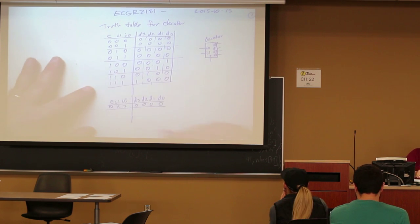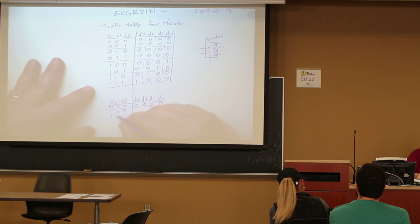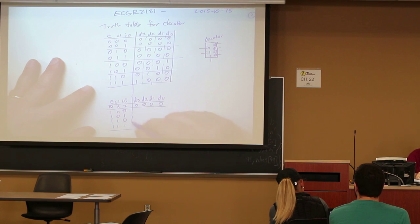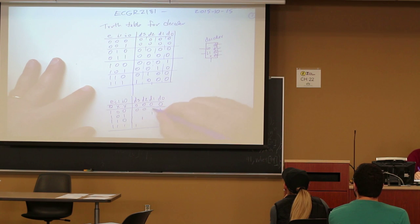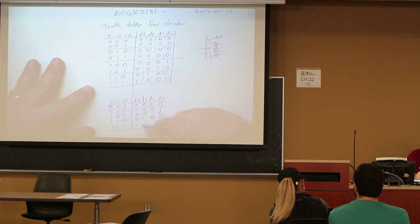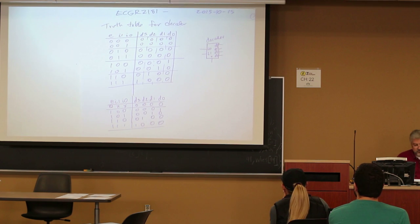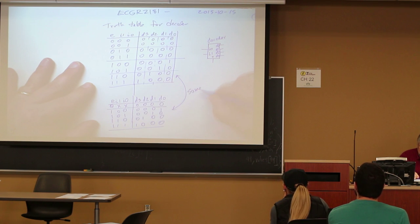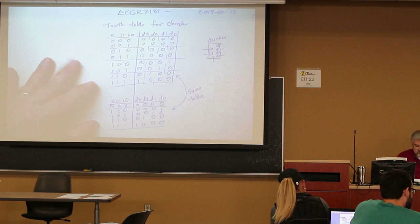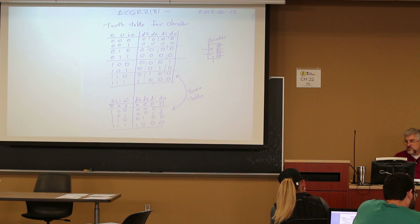And then the truth table would continue on with E=1 and the input combinations 00, 01, 10, 11, giving outputs 1000, 0100, 0010, 0001. These are the same outputs we saw before — easy enough.